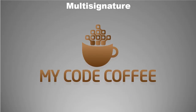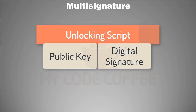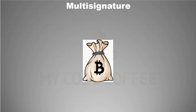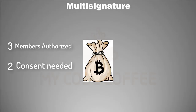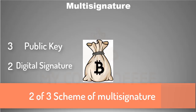In the previous chapter we discussed pay-to-public-key-hash script, where one individual was transferring a fund — there was only one digital signature and one public key. But consider a scenario where a fund does not belong to an individual, and to spend that fund you need consent of more than one individuals. Think of an organization having a corpus fund for basic expenditures, with three members authorized to spend it, requiring signatures of at least two out of three. This is termed as the two-of-three scheme of multi-signature.